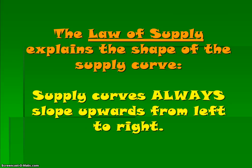The law of supply explains the shape of the supply curve. Supply curves always slope upwards from left to right because of the positive relationship between price and quantity, and the way we set up our supply curve graphs where price is always on the vertical axis and quantity is always on the horizontal axis.